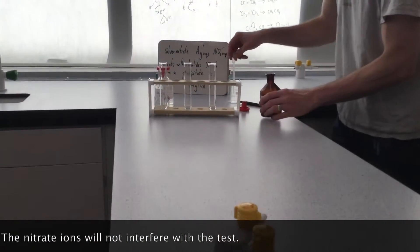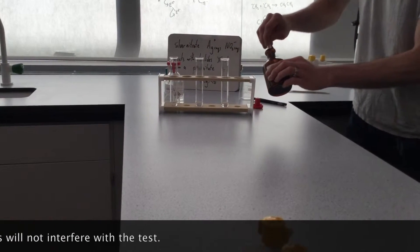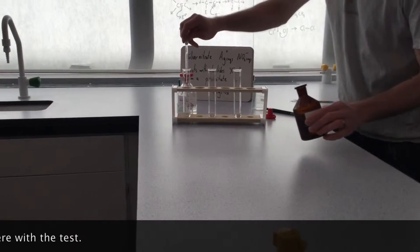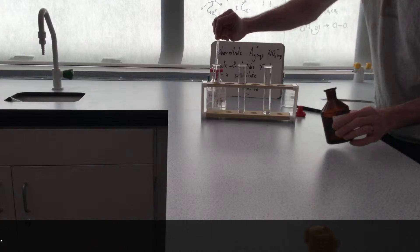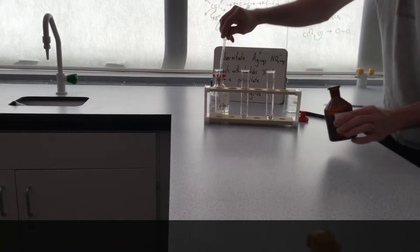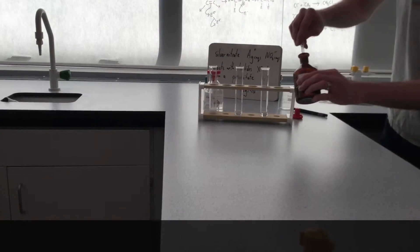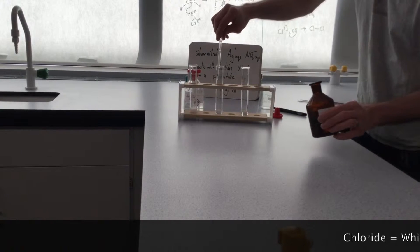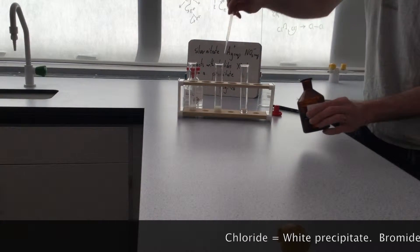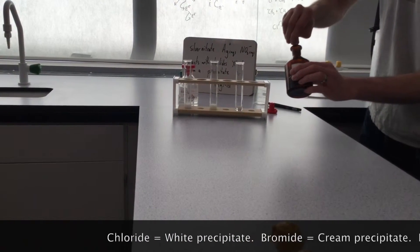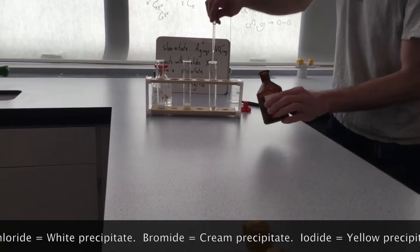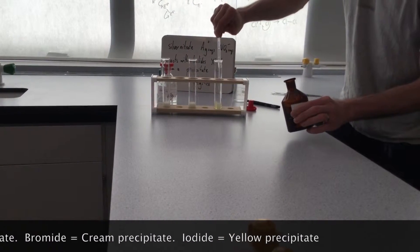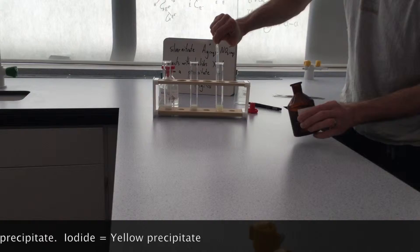Now you'll see when the silver nitrate gets added, the color of the precipitates. So that's chloride. Chloride should form a white precipitate. Bromide is next. And that forms a cream precipitate, slightly darker white. And then lastly, iodide forms a yellow precipitate.